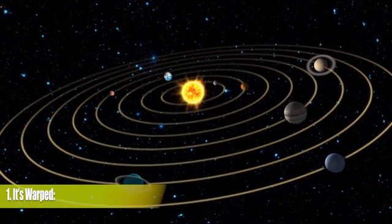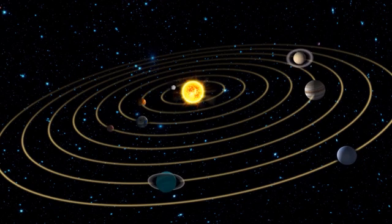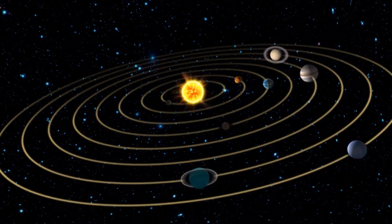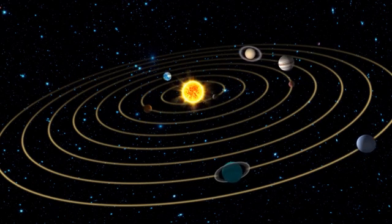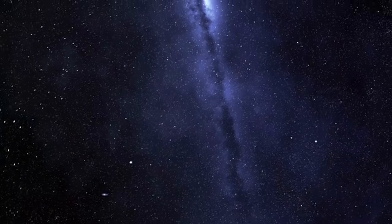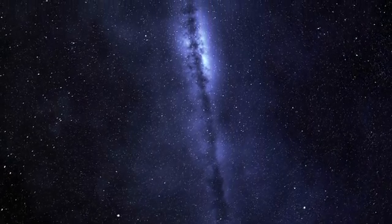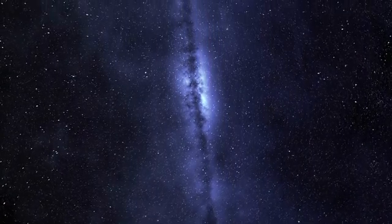1. It's warped. First off, the Milky Way is a disk that spans roughly 120,000 light-years and includes a 12,000 light-year diameter bulge in the middle. However, the disk is far from being perfectly flat.